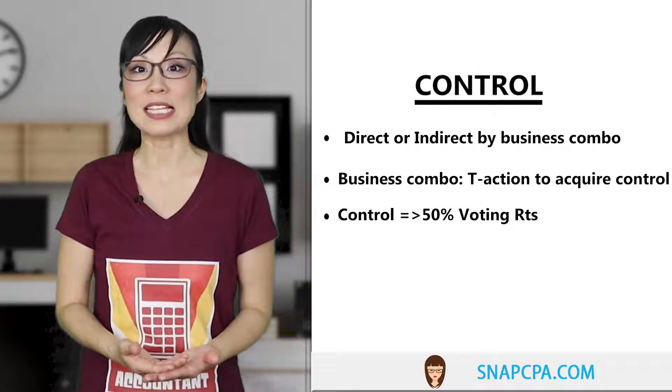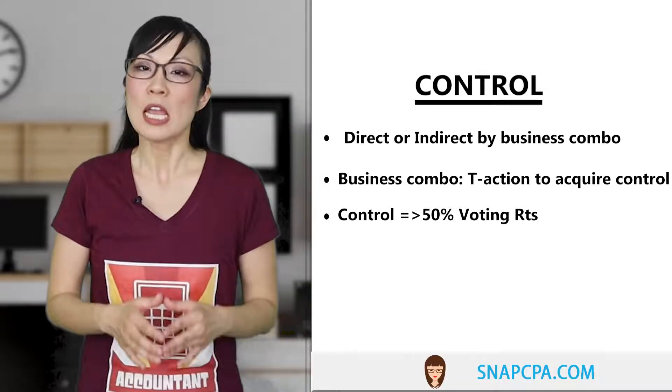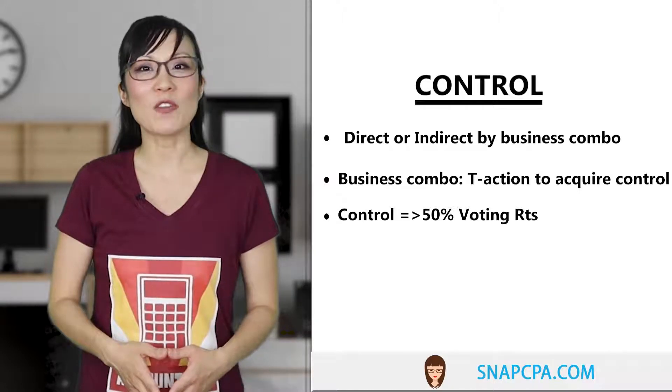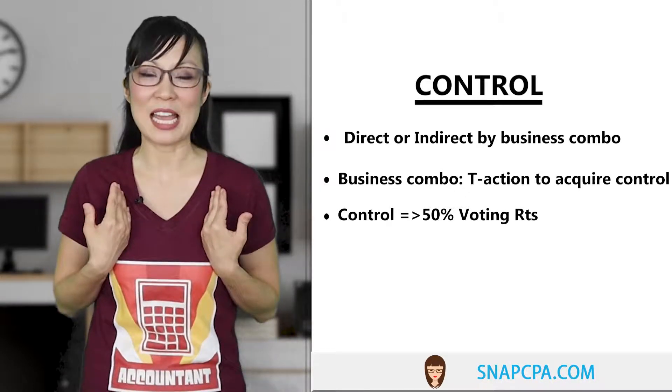Usually, common stock has voting rights and preferred stock does not. If you own 51% of the voting rights and I own 49% and we go to a vote, you win every single time. It doesn't matter whether you own 51% or 99% — it's the same voting control. If you win the vote every time, then you effectively control the company, because the company has to do whatever you, the controlling shareholder, decides.